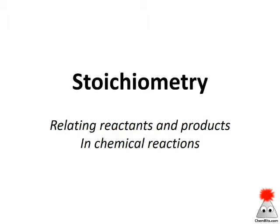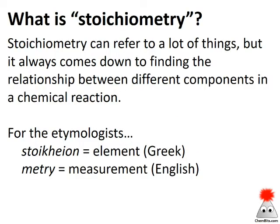Many problems in chemistry can be lumped under the big category of stoichiometry problems. Let's take a look at how to approach those problems in a systematic and consistent way. Stoichiometry refers to anything that is exploring the relationship between different components in a chemical reaction, and those components can be anything, whether they're reactants, products, or heat that's consumed or generated.